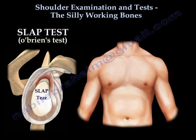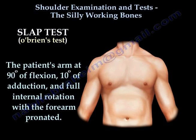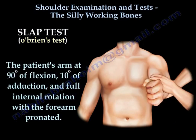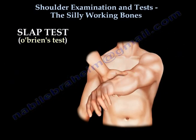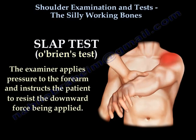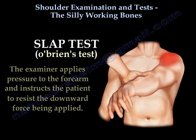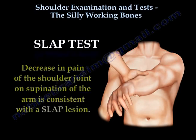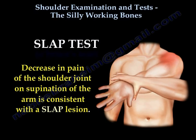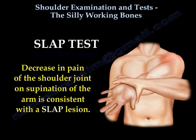SLAP test, also called O'Brien's test, is done for a real lesion called the SLAP tear lesion. The patient's arm is at 90 degrees of flexion, 10 degrees of adduction, and full internal rotation with the forearm pronated. The examiner applies pressure to the forearm and instructs the patient to resist the downward force being applied. Pain at the shoulder joint indicates a SLAP lesion. Decrease in pain on supination of the arm is consistent with a SLAP lesion.